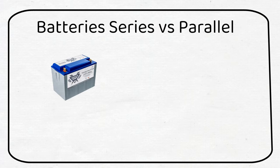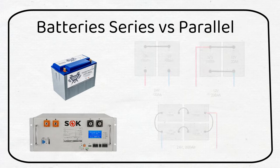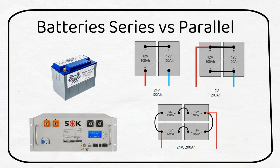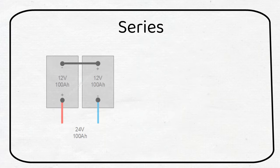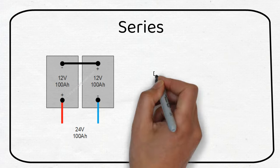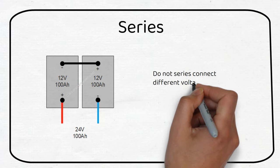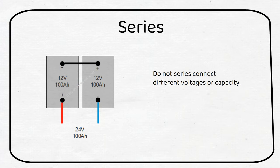In this video I'm going to talk about wiring batteries in series or parallel. Let's get started with the basics and expand on several items later. If we wire in series, the voltage gets added up while the capacity stays the same. Take these 12 volt batteries for example. If we wire them in series we'll have a 24 volt 100 amp hour battery. Do not series connect different voltage or capacity batteries.